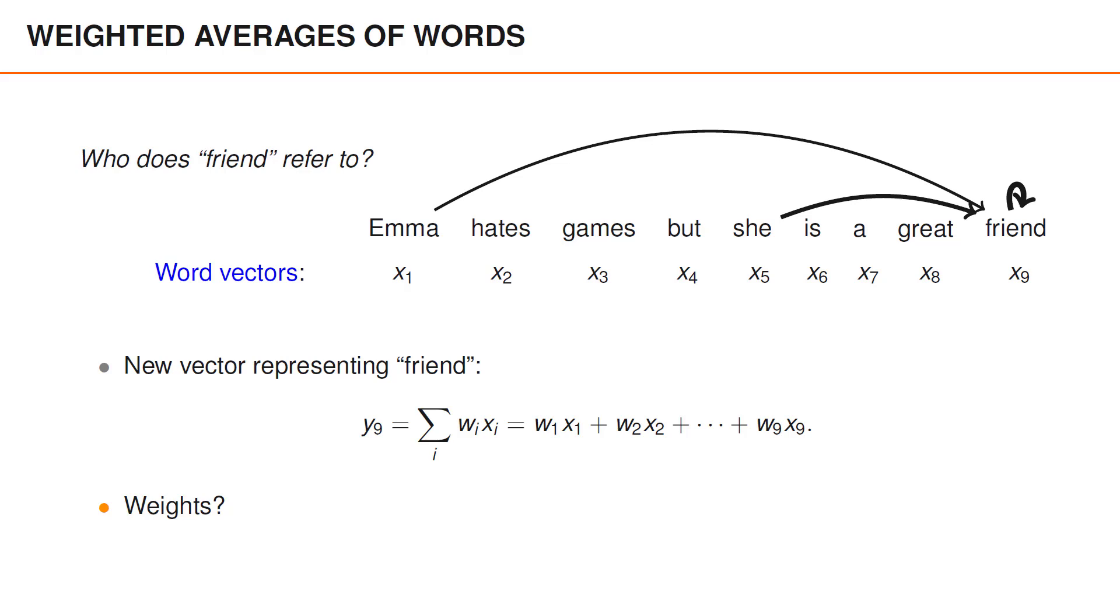perhaps we could obtain a new vector that carries additional information about friend which is specific for this particular sentence.